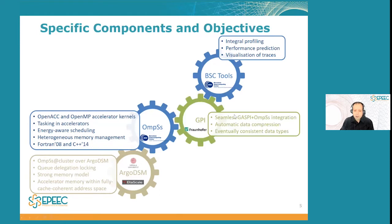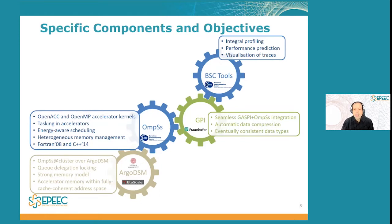On the side of OMS, alternatively, application developers can use GPI. GPI is the implementation of GASPI by Fraunhofer. We have further developed the integration of GASPI and OMS to make it easier for users. GPI now includes two notable features: automatic data compression and eventually consistent data types. These are outstanding features for AI applications, improving programmability, productivity, and performance.